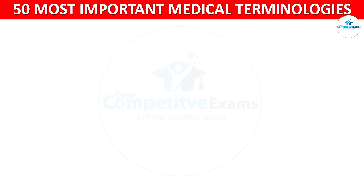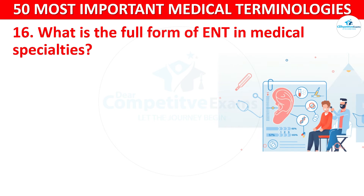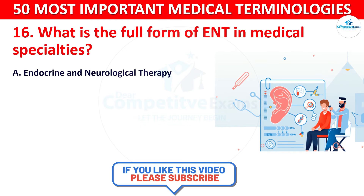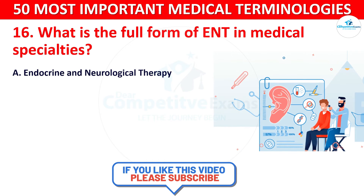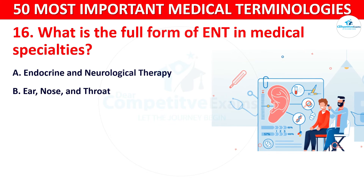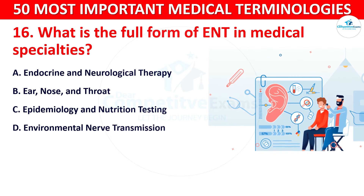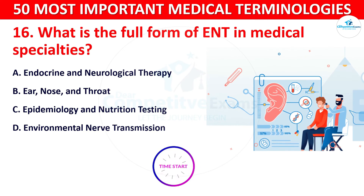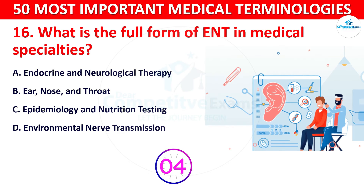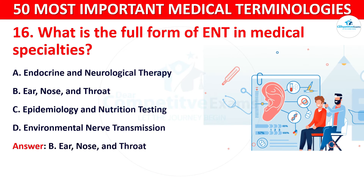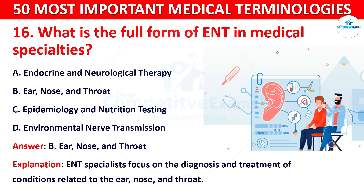Question number 16: What is the full form of ENT in medical specialties? Your options are: A) Endocrine and Neurological Therapy, B) Ear, Nose and Throat, C) Epidemiology and Nutrition Testing, or D) Environment Nerve Transmission. The correct answer is Ear, Nose and Throat. ENT specialists focus on the diagnosis and treatment of conditions related to the ear, nose and throat.